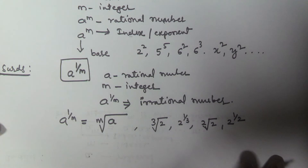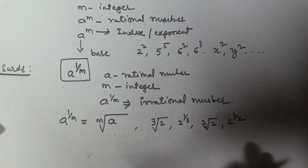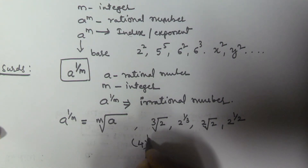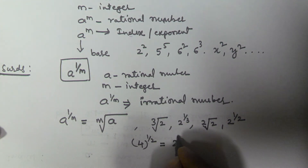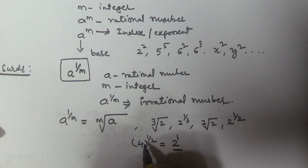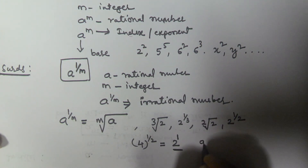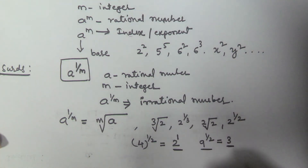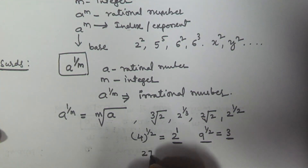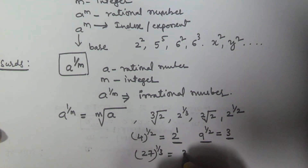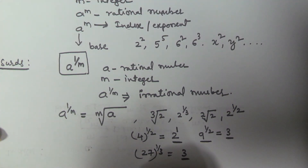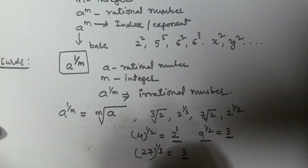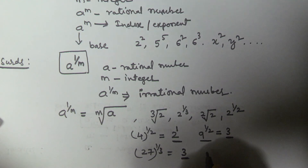Some numbers seem like surds but are actually indices. For example, four to the power of one by two looks like a surd, but it equals two, which is two to the power of one — so it is actually an index. Similarly, nine to the power of one by two equals three, so it is an index, not a surd. And twenty-seven to the power of one by three equals three, so it is also an index, not a surd.